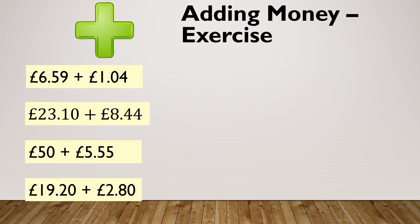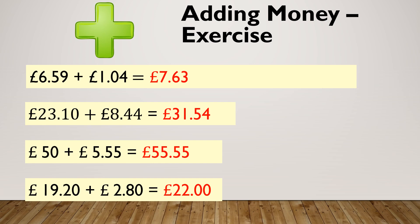OK, give these questions a go — pause the video and try them for me please. Let's see how you got on. The one where the most mistakes are made is the third one. Hopefully when you laid it out you realised it was £50 plus £5.55, so be really careful when laying out your sums. And on the bottom one, if you've just written £22 without the .00, that's fine too.